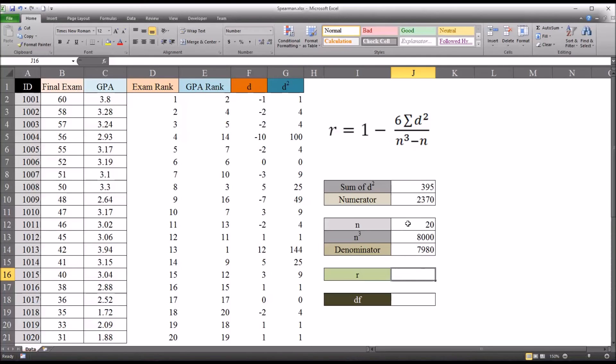And now, from this point, it's fairly straightforward to calculate Spearman's rho. First, I'll start equal sign, then 1 minus, and open parentheses. And take the numerator, and divide it by the denominator. So you can see we have a Spearman's rho value of 0.7.